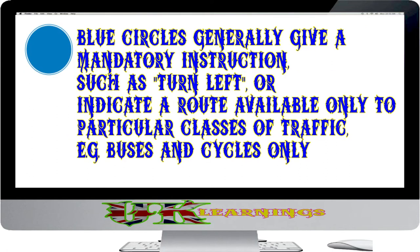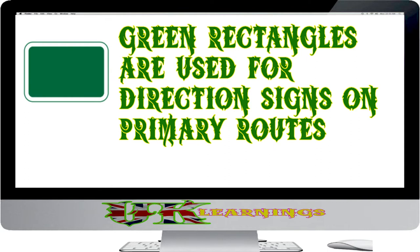Blue circles generally give a mandatory instruction, such as turn left, or indicate a route available only to particular classes of traffic — for example, buses and cycles only. Green rectangles are used for direction signs on primary routes.